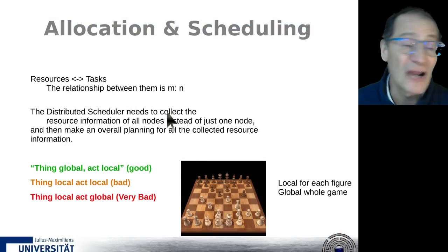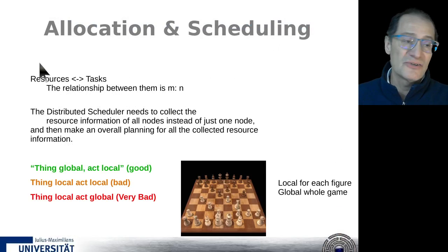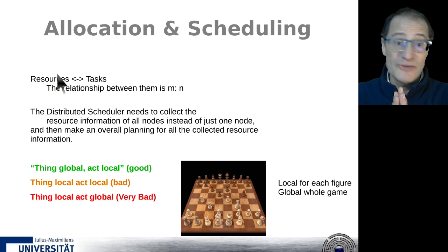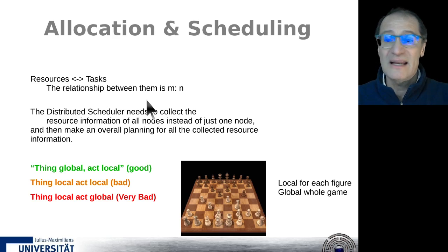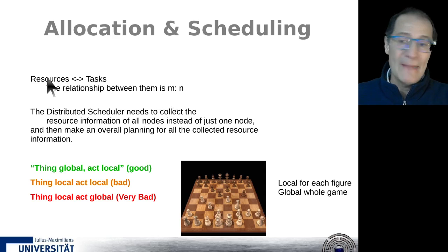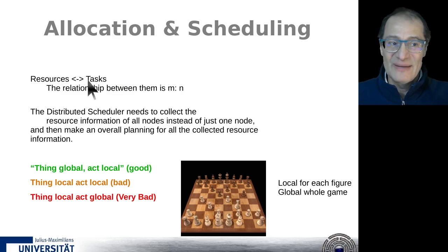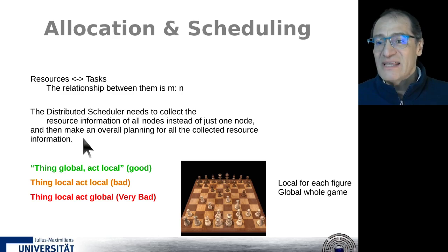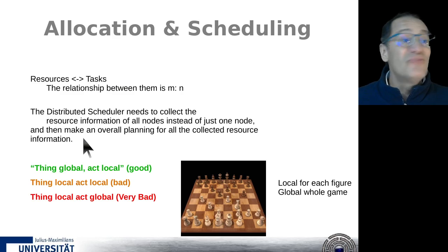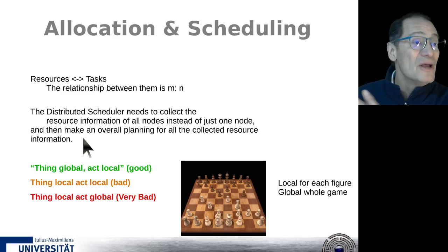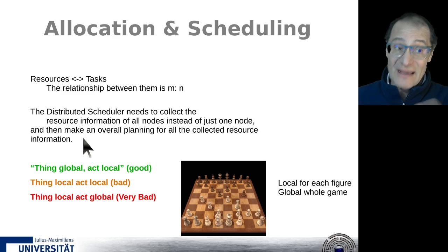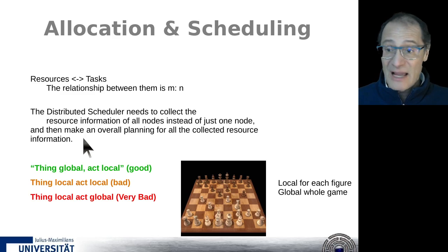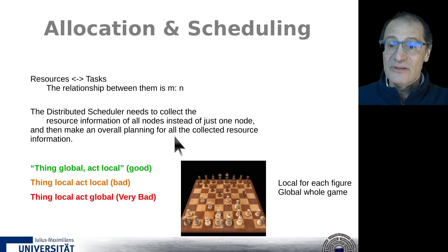Now let's talk about allocation and scheduling. We have some resources and some tasks, and we have to find an allocation of resources to tasks. The relationship is m-to-n: we have m resources and n tasks and we have to distribute them. The distributed scheduler needs to collect all resource information from all nodes. The scheduler has to know the state of every node — the load, the idle time, and so on — and which tasks shall be executed. Then it can make an overall decision.